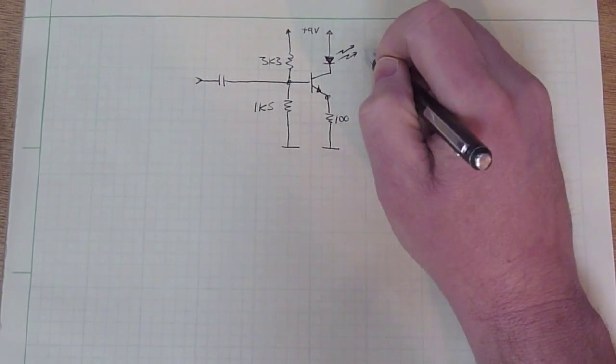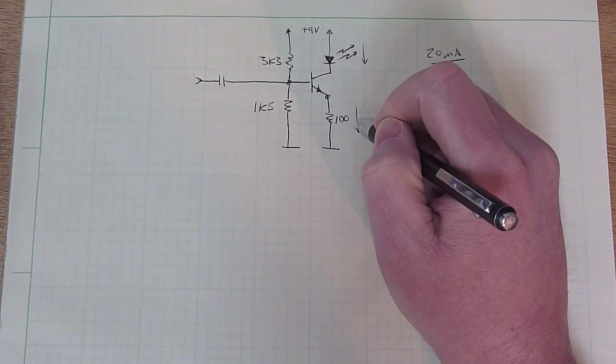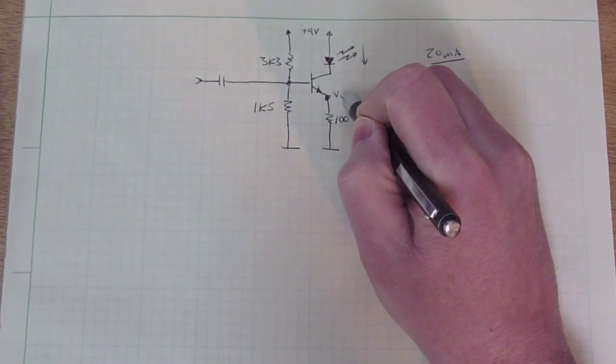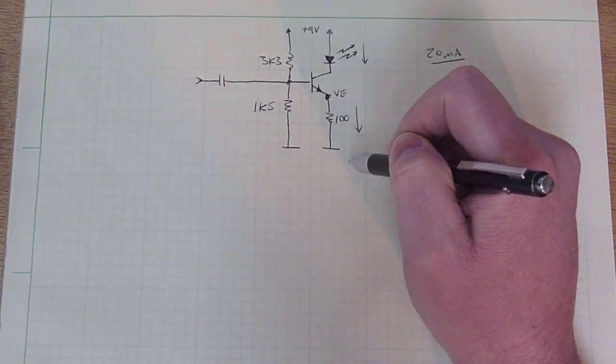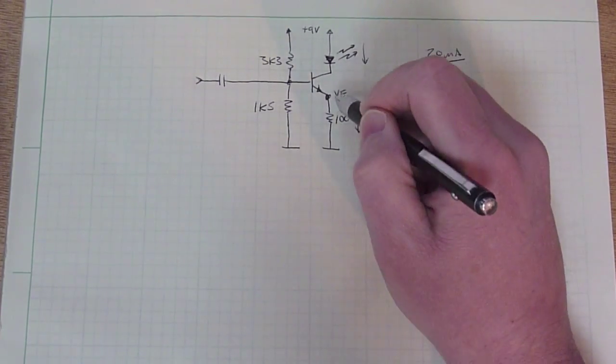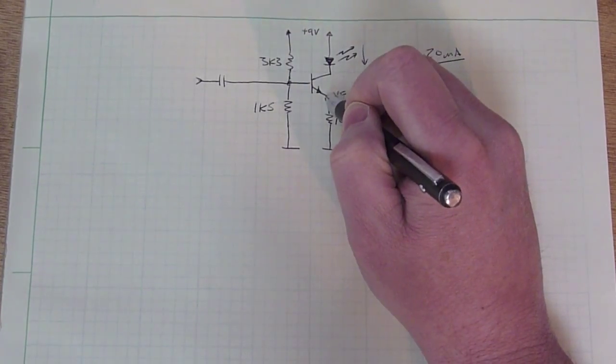The current that flows through this LED is basically the same as the current that's flowing through this resistor. So if I can set the voltage here, which is VE, to be 2 volts, that will force 20 milliamps to flow through the LED because the collector current and the emitter current are basically the same. So I want this to be 2 volts.